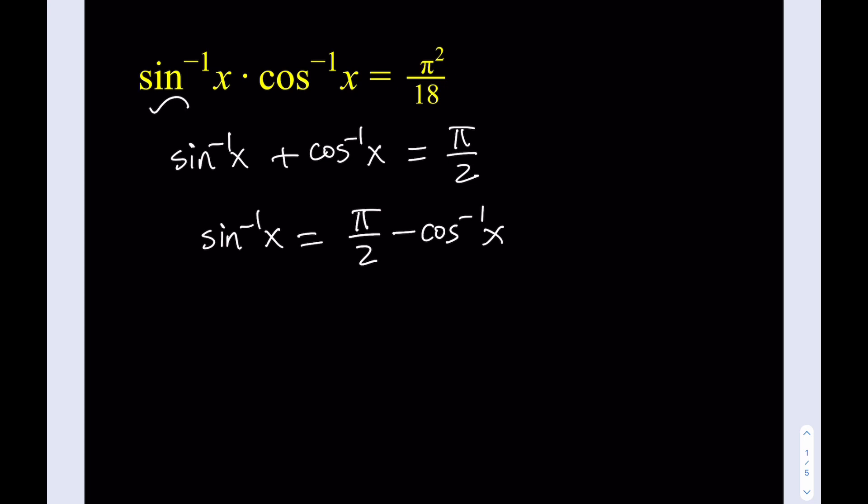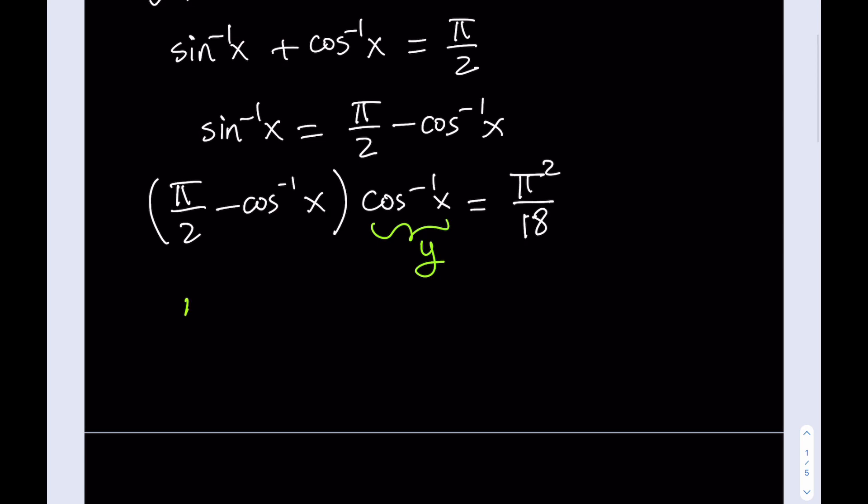Now, in my equation, I do have sine inverse of x, so let's go ahead and do that replacement. It's going to give me pi over 2 minus cosine inverse of x, multiplied by cosine inverse of x. Now, we have a single variable. But that's not the end of the story because we still have to use substitution. We can just go ahead and replace cosine inverse of x with another variable, say y. And then we should be getting pi over 2 minus y times y equals pi squared over 18.